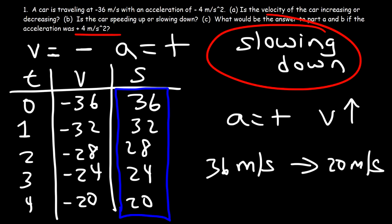To review: the vehicle is speeding up if the signs of velocity and acceleration are the same. And the vehicle is slowing down if the signs of velocity and acceleration are different. Be sure to subscribe and click on that notification bell. Thanks again for watching.